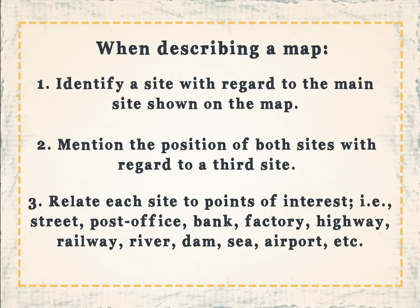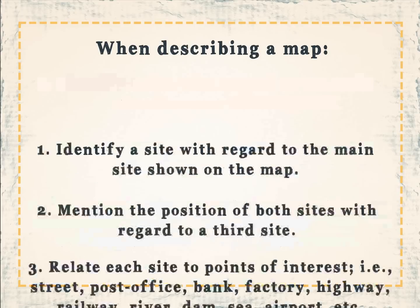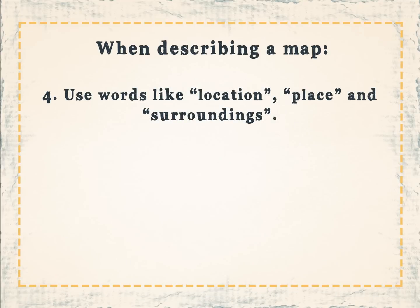3. Relate each site to points of interest, i.e. streets, post office, bank, factory, highways, railway, river, dam, sea, airport, etc. 4. Use words like location, place, and surroundings.